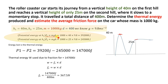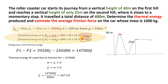We will first calculate the potential energy at each height. Potential energy is mg×h. Substituting mass, gravity, and h1 gives us the potential energy at the first peak. Then substituting h2 gives us the potential energy at the second peak.